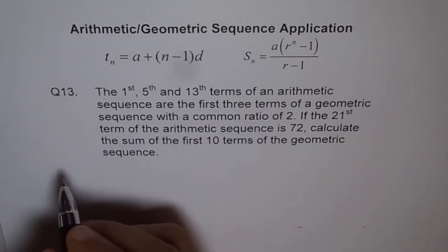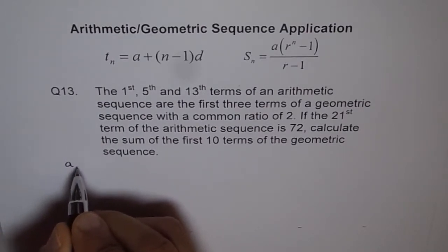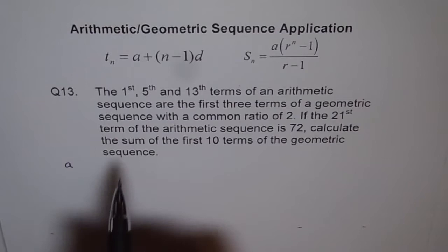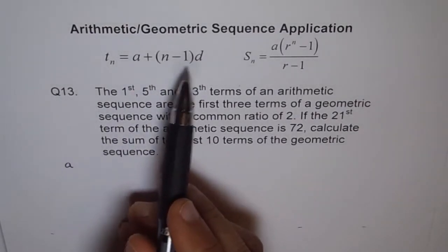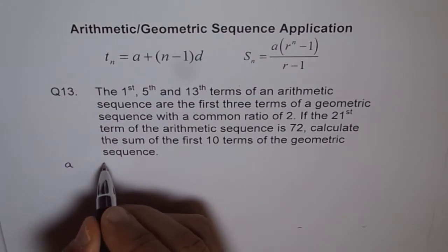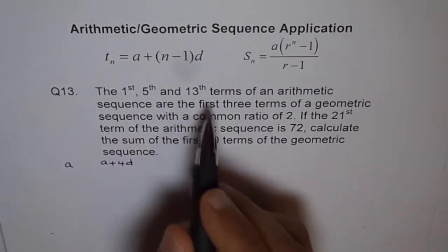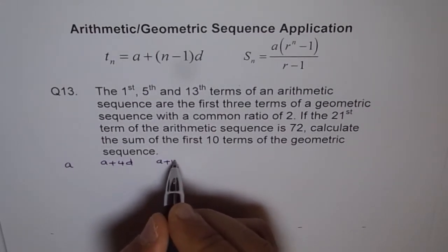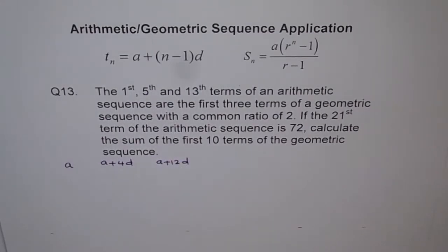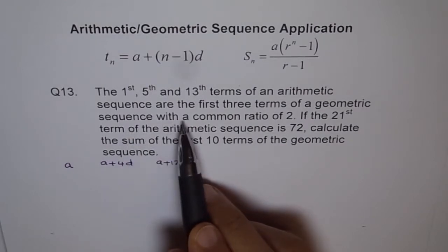We can write the first term as A. So A becomes the first term of the arithmetic sequence. The fifth term will be A plus 5 minus 1 times D, which is 4D — so the fifth term is A plus 4D. And the thirteenth term will be A plus 12D. These are our three terms of the arithmetic sequence, and these are also the first three terms of the geometric sequence.